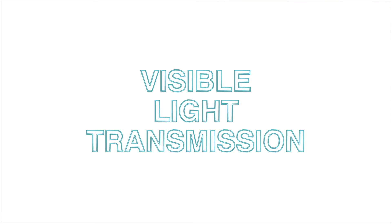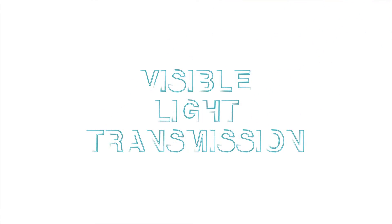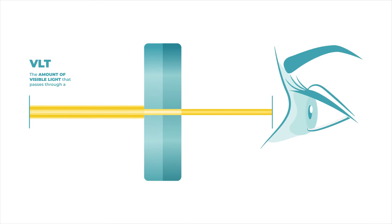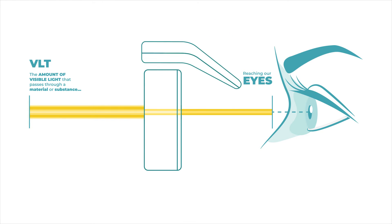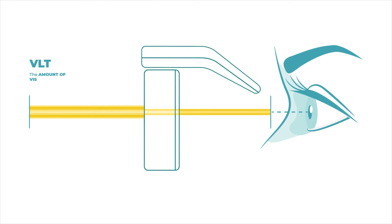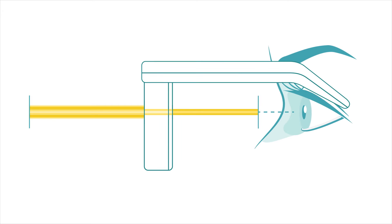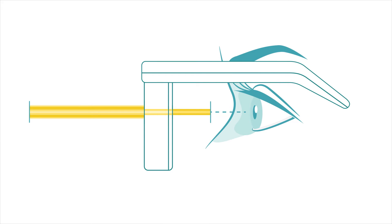Visible light transmission, or VLT, is a concept that plays a meaningful role in laser safety. VLT refers to the amount of visible light that passes through a material or substance reaching our eyes. Picture a pair of sunglasses — their VLT determines how much sunlight they allow to pass through.